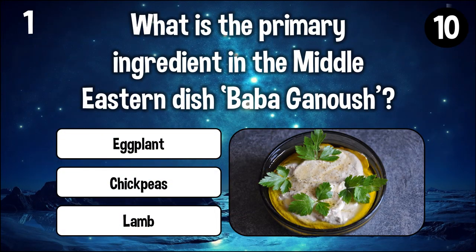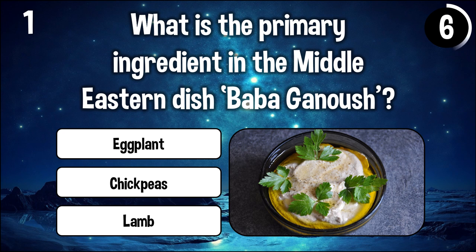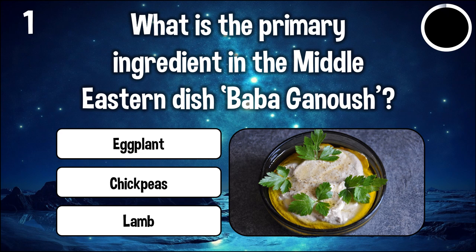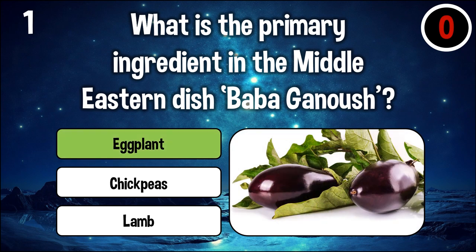What is the primary ingredient in the Middle Eastern dish baba ganoush? The answer is eggplant.